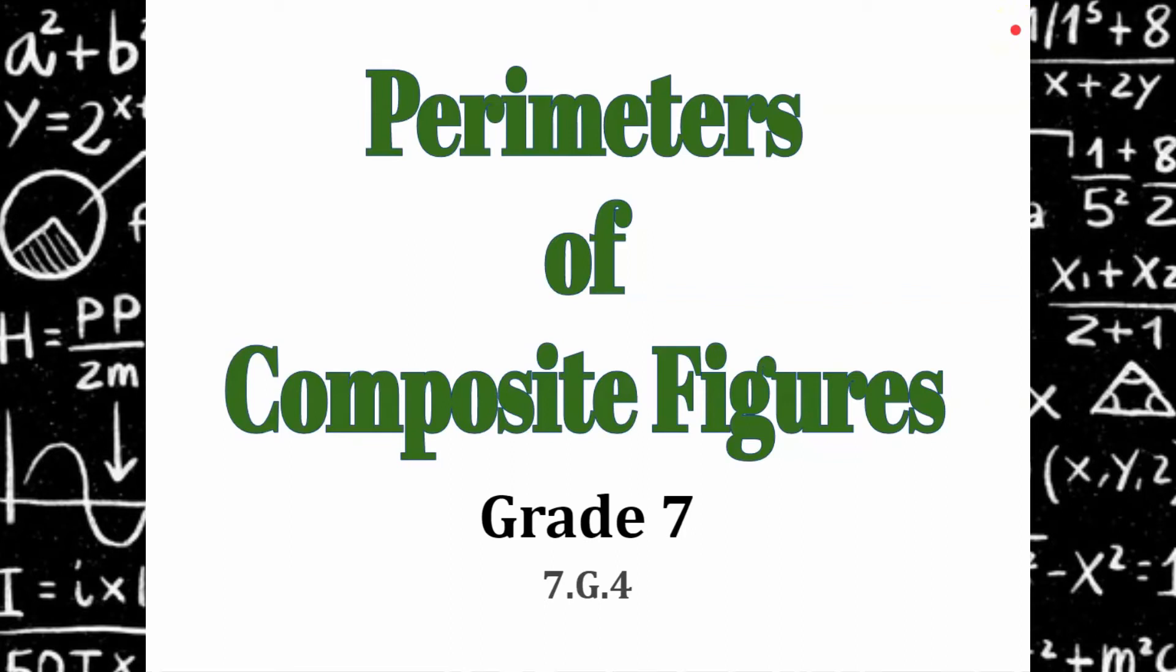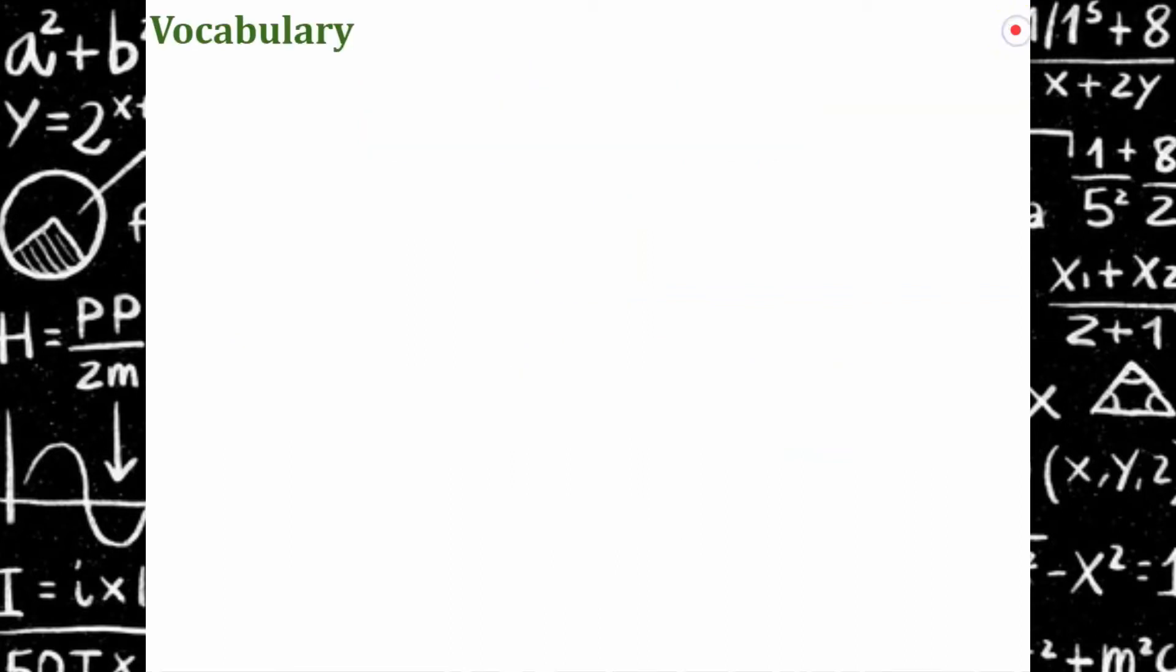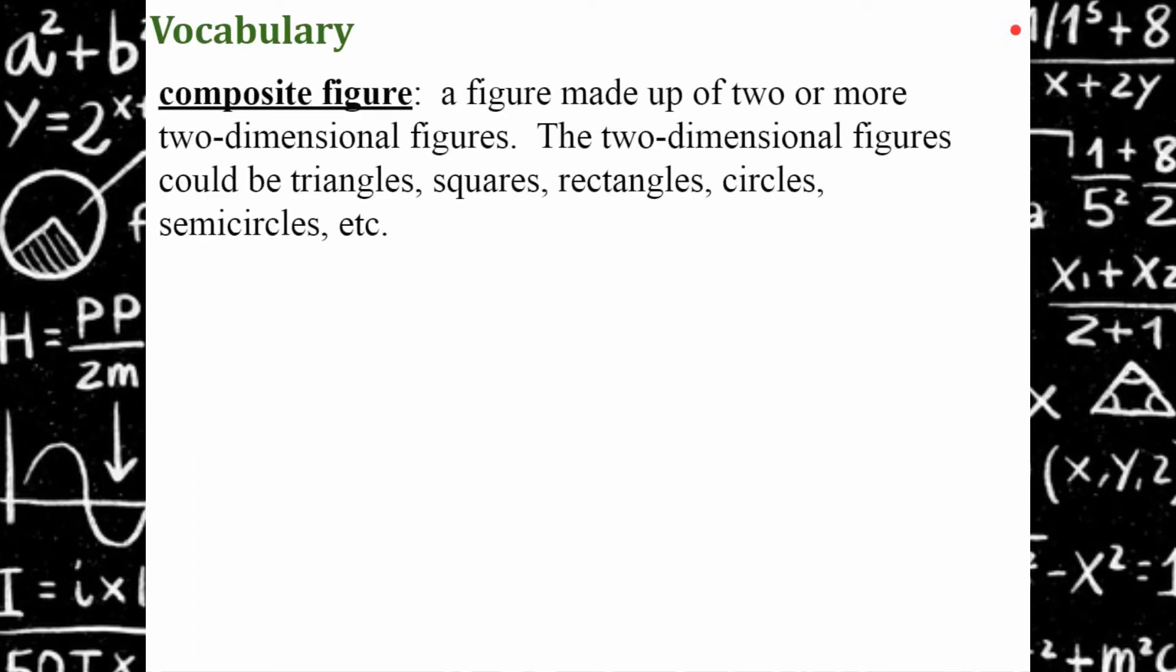Welcome to the lesson Perimeters of Composite Figures. Let's go over some vocabulary. A composite figure is a figure made up of two or more two-dimensional figures. The two-dimensional figures could be triangles, squares, rectangles, circles, semicircles, etc.